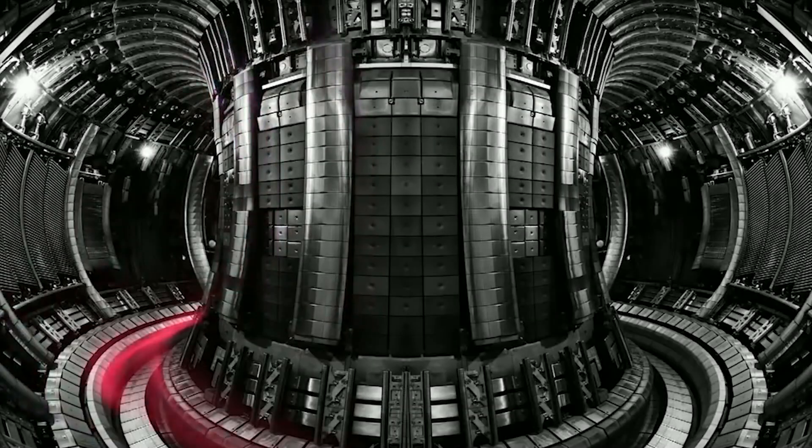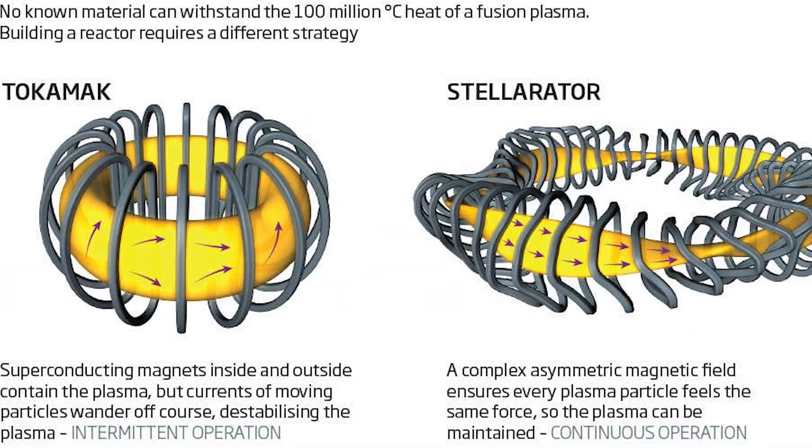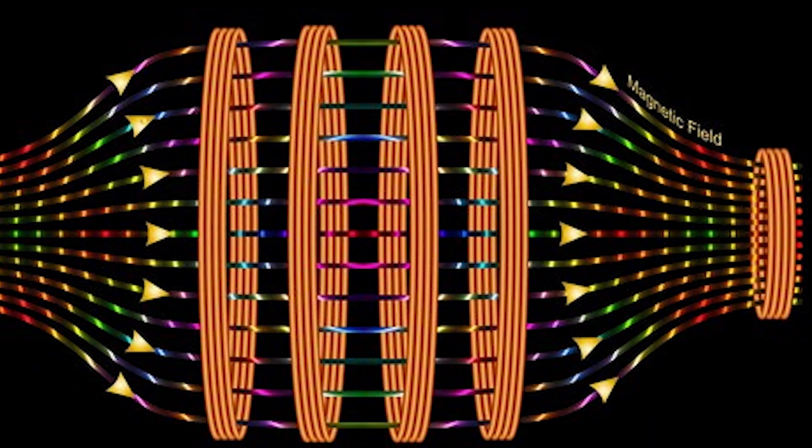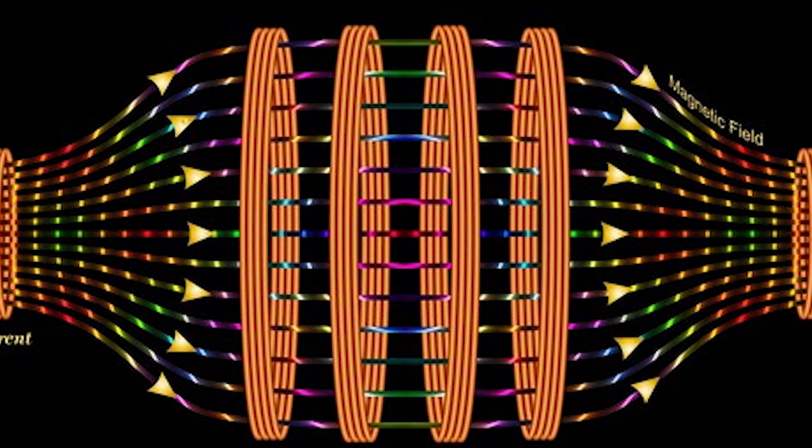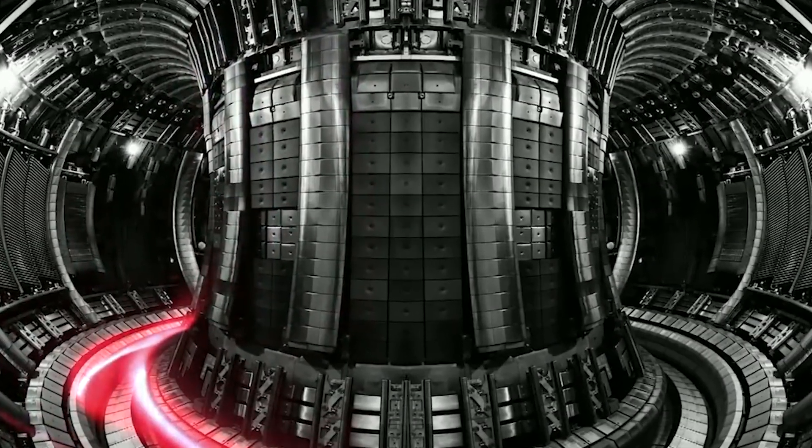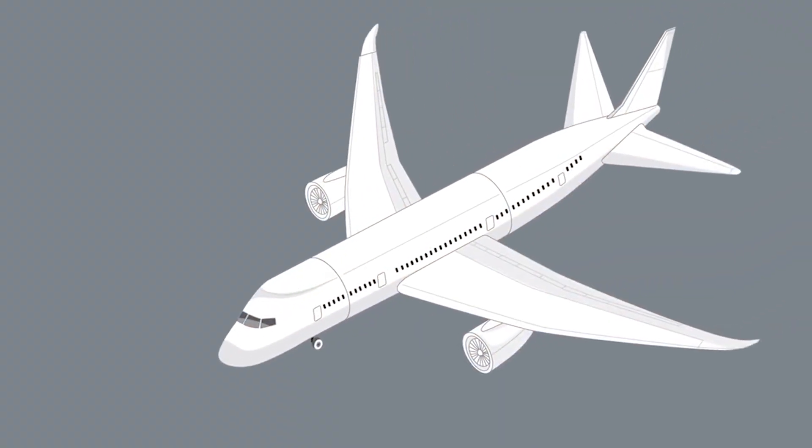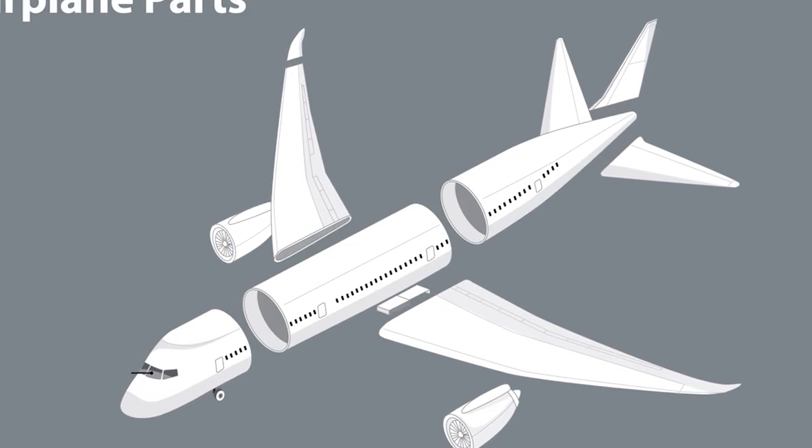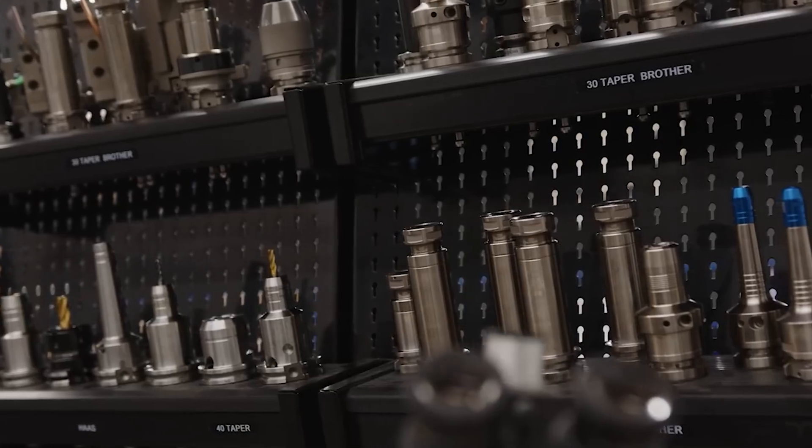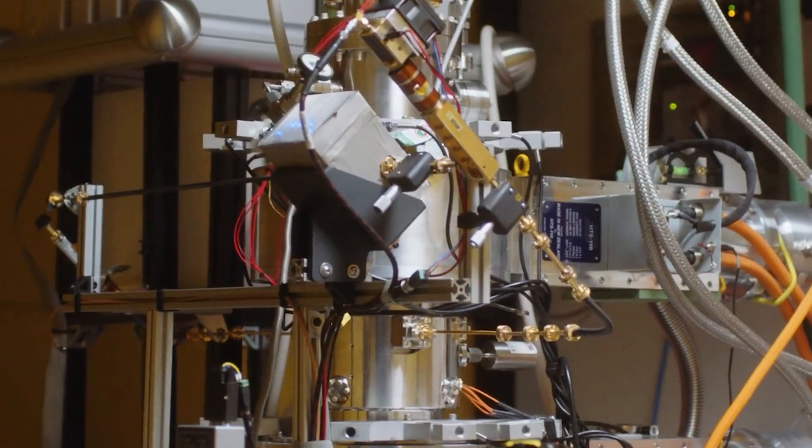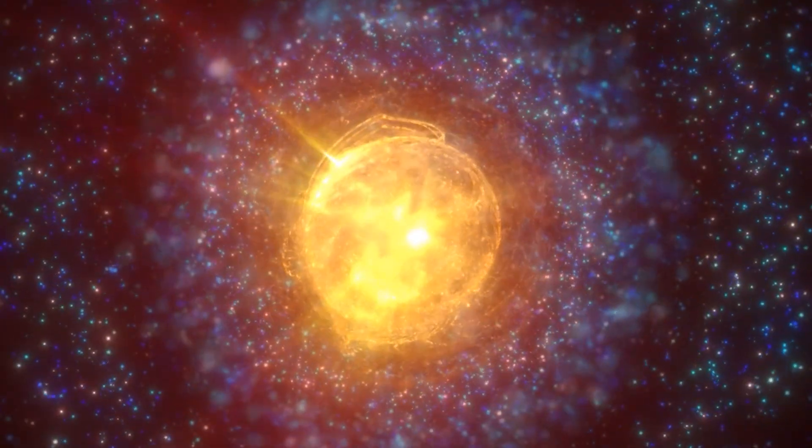Fusion machines come in many forms. Tokamaks and stellarators dominate. Lasers take another approach. Beyond them are niche ideas like magnetic mirrors and electrostatic confinement, where high voltage traps ions instead of magnets. The team saw these approaches like early airplane designs: many shapes, many ideas, all trying to fly. They sought a combination that could work at a small scale and still deliver enough energy for meaningful research.